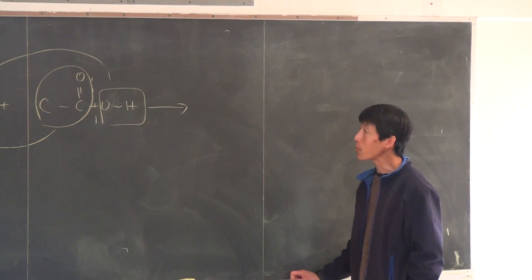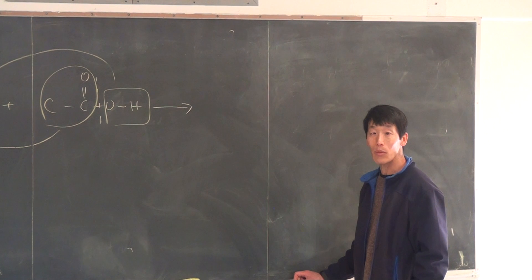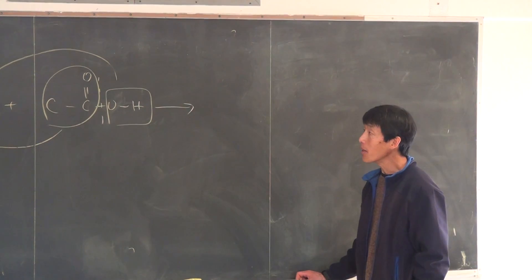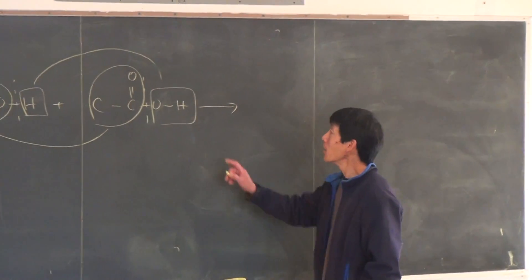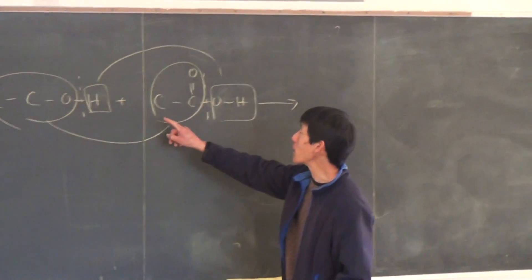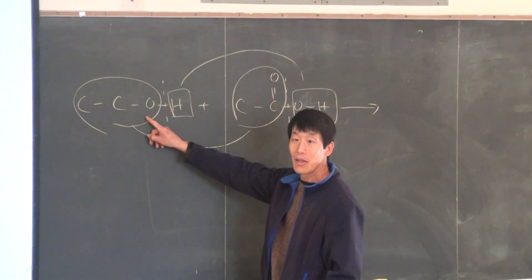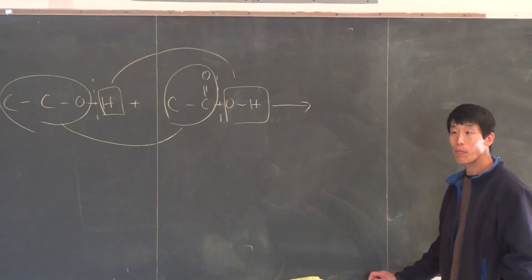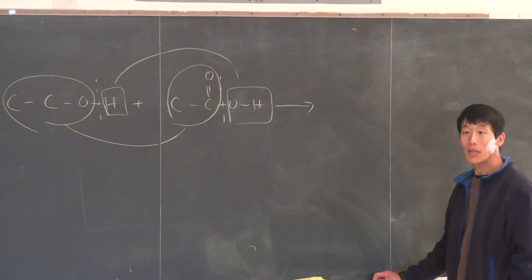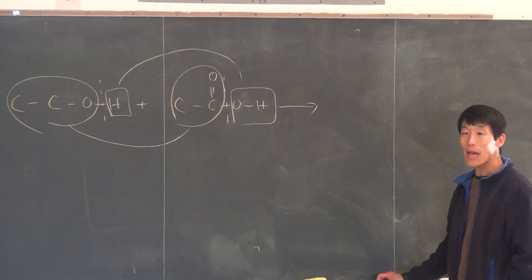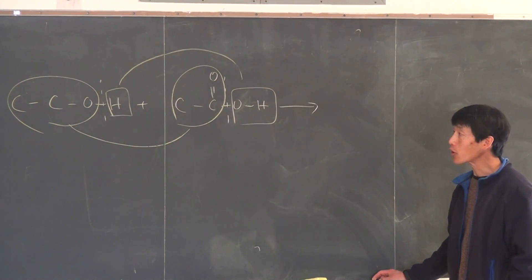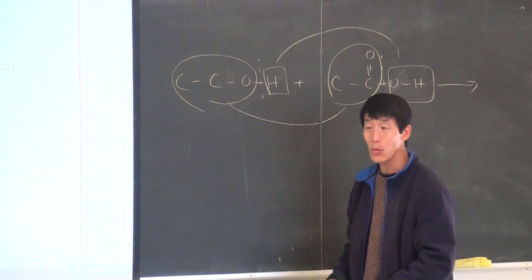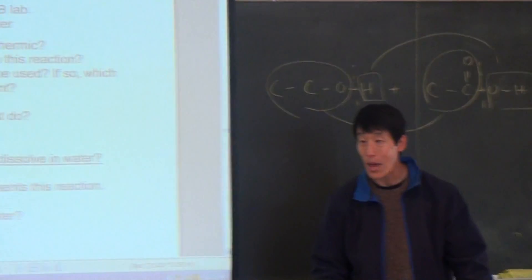So, is there one reactant we want to be the limiting reactant, or does it matter? If the acid is the limiting reactant and we use an excess of alcohol, will that help us make more ester? Yes, it actually doesn't really matter which one is the excess reactant in this case. There are some reactions where it does matter, but here the acid doesn't matter.